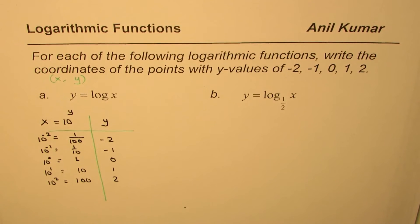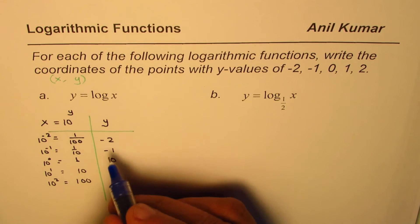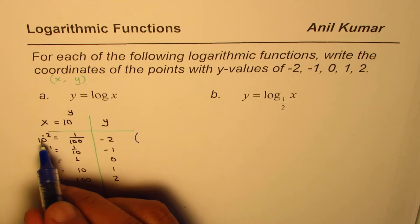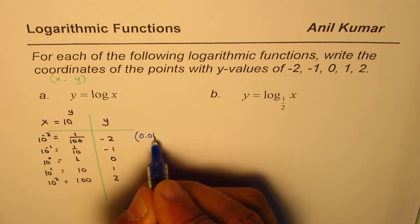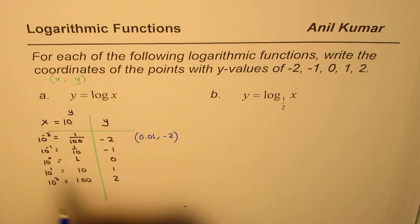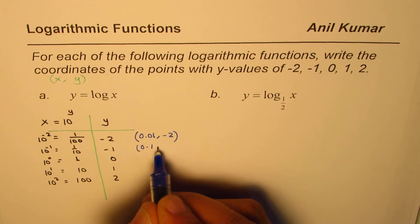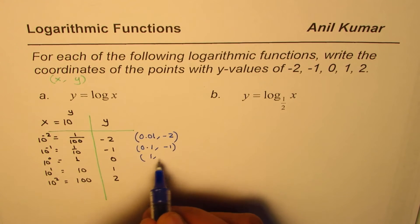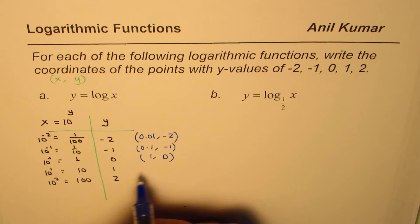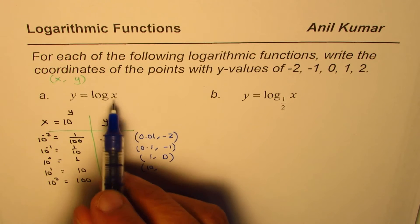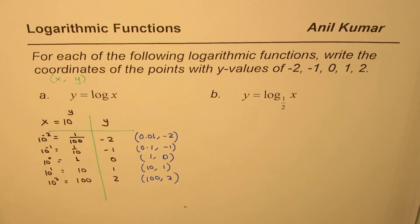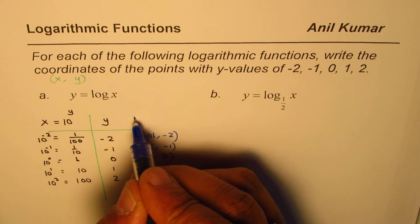So, these are the y values. You need to write them as coordinate points. Let's list them as coordinate points. You could write this as 0.01, so 0.01 minus 2. That is 1 over 100. 1 over 10 is 0.1 minus 1. And then, we have at 0, x values 1, y is 0. So, that is the x-intercept. When x is 10, same as the base, y values 1. When it is 100, y is 2. So, that becomes the coordinates.